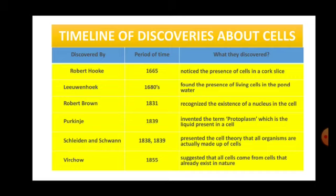In 1839, Purkinje invented the term 'protoplasm,' which is the liquid present in the cell — more precisely, protoplasm is the living component of the cell. Then in 1838–1839, Schleiden and Schwann presented the cell theory, stating that all organisms are actually made up of cells. The cell theory forms the basis of the biology that we study today. To this cell theory, in 1855, Rudolf Virchow suggested a modification.